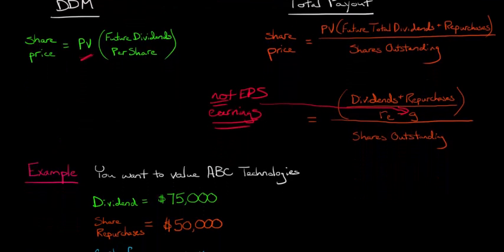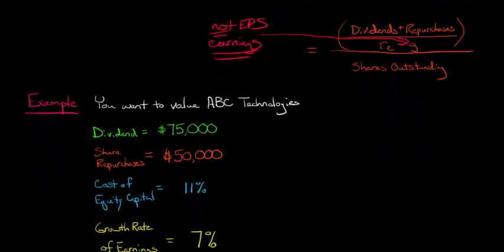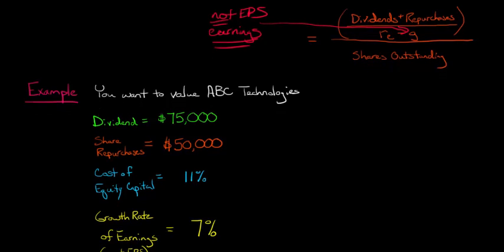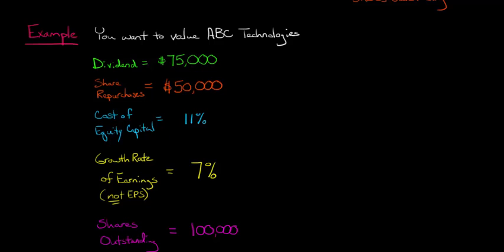Let's jump into an example to make it a little easier for you to understand. So let's say that you want to value this tech firm, ABC Technologies. And so you've got the following information about this firm. Let me add a little more space so you can see. You also know the number of shares outstanding is 100,000. We've got a growth rate of earnings of 7%, cost of equity capital 11%, and then you've got during the year $75,000 in dividends and $50,000 in share repurchases.